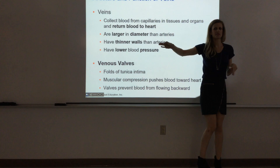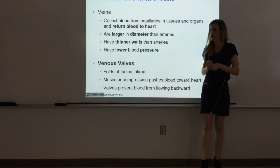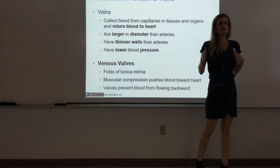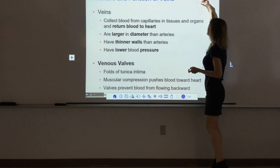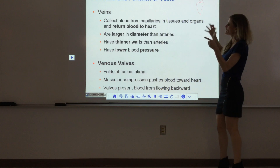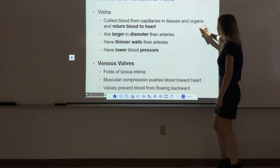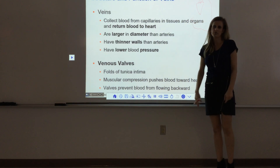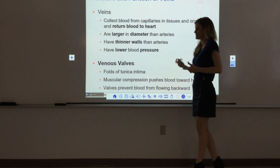The tunica externa in veins is thicker than the tunica media, which is the opposite of arteries. Veins have to withstand a much lower pressure than arteries. The heart is where all the force originates, so blood goes out into arteries under really high pressure, then travels through all the arteries and capillaries, and by the time it gets to the veins it has lost a lot of pressure. Blood pressure in the veins is not nearly as high as in the arteries.